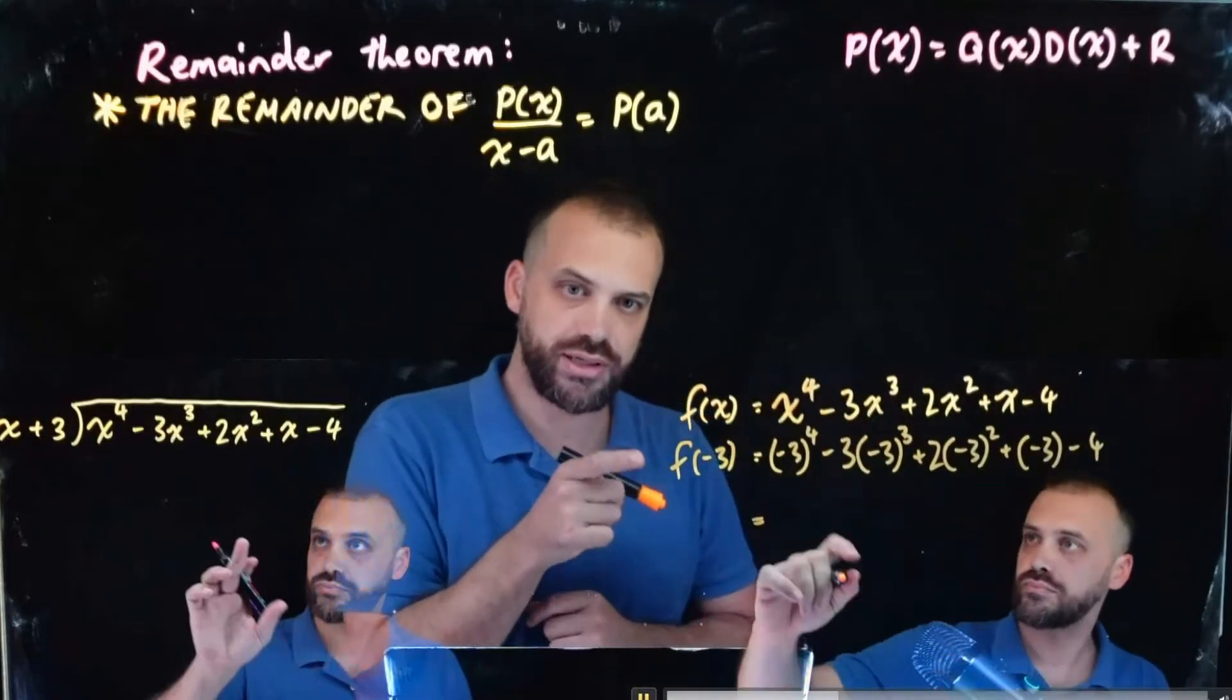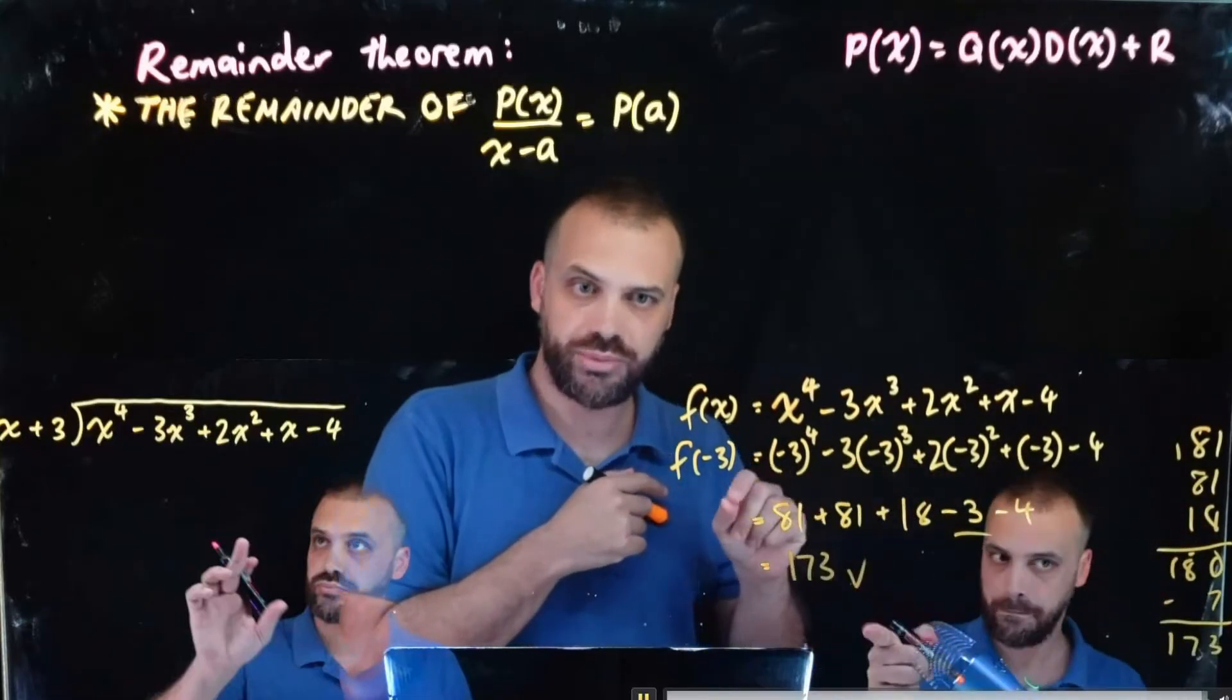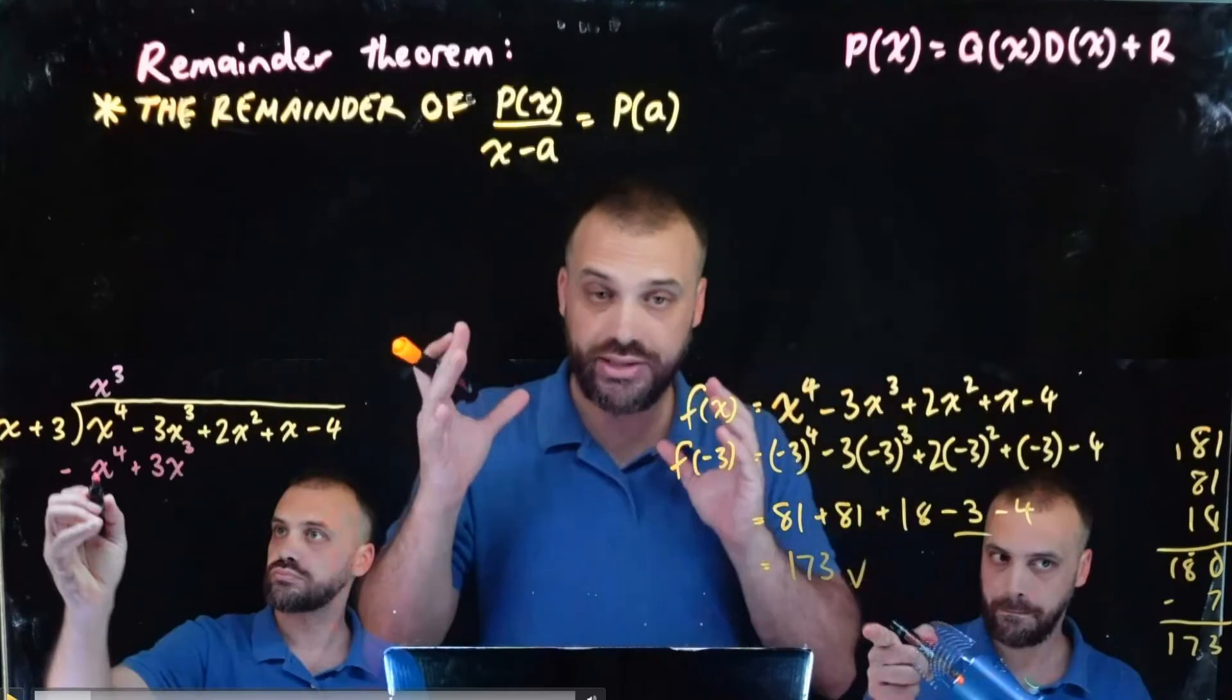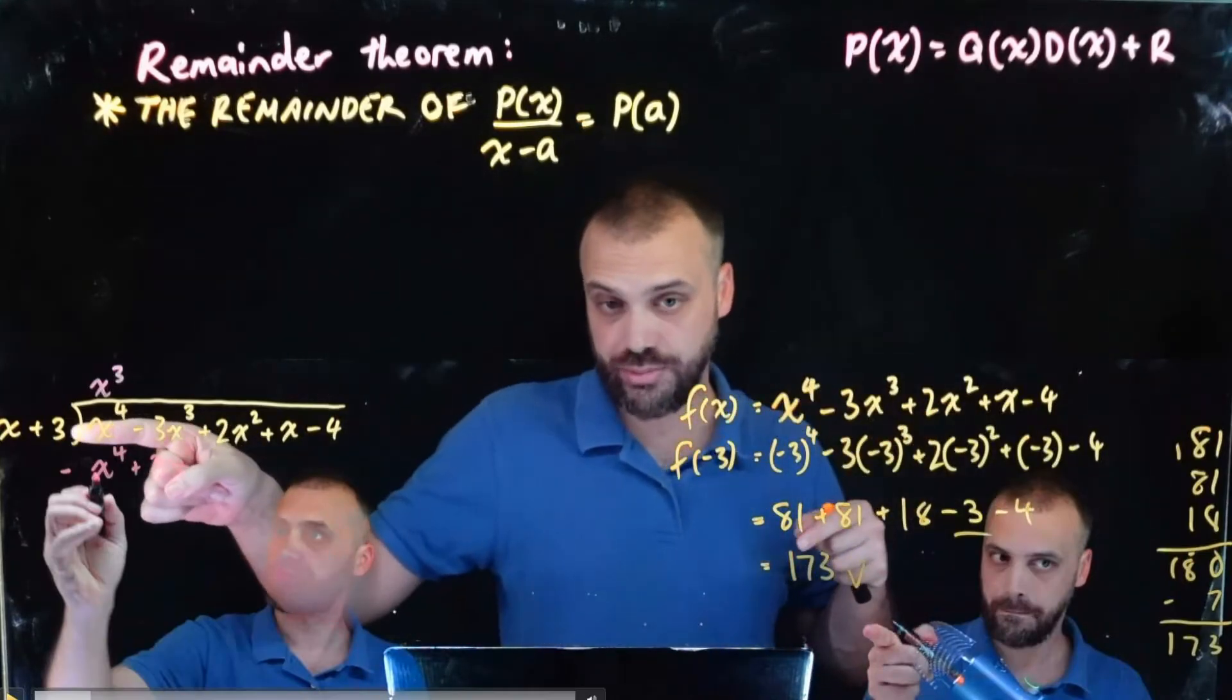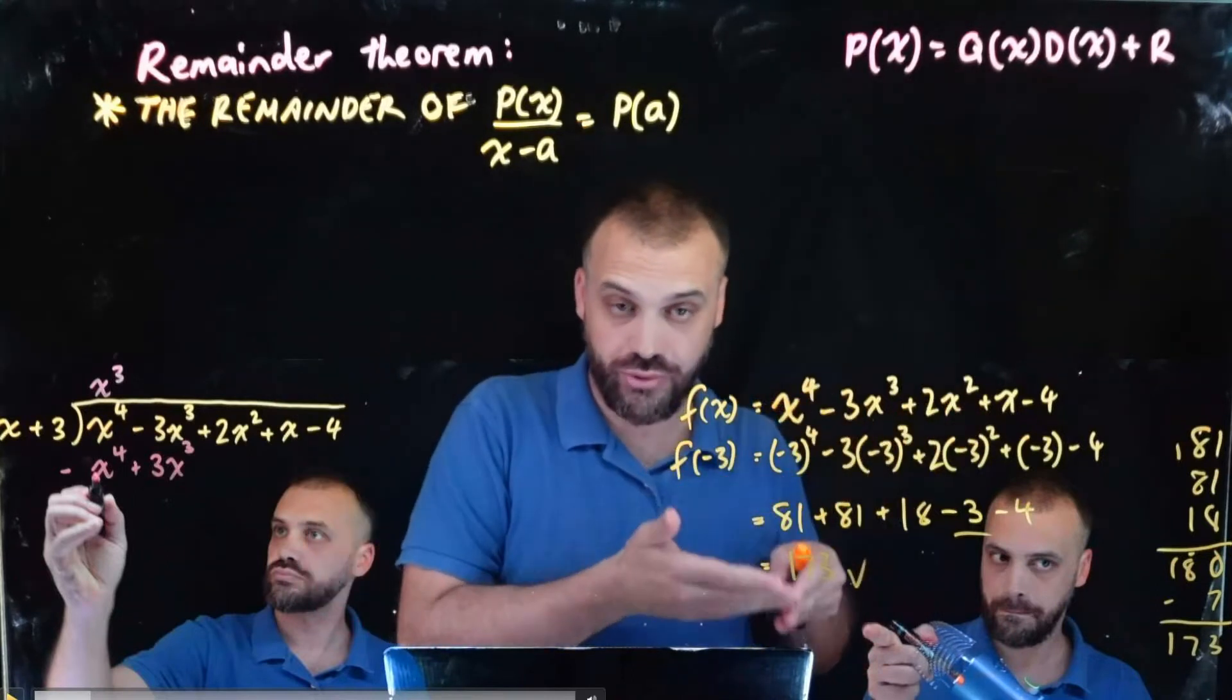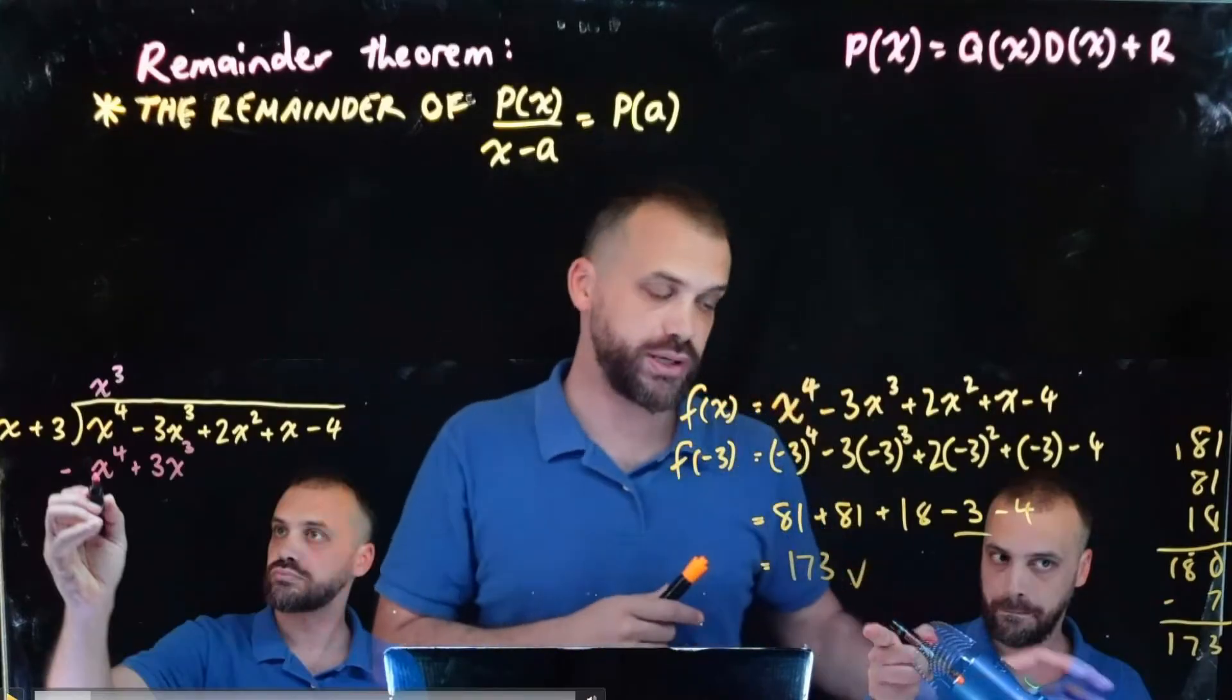You can see subbing in negative 3 here for all the x values, a little bit of mental math, and we get 173. And that's the remainder, that's it. If you want to divide that by, in this case x plus 3, just sub in minus 3 into your function and you know the remainder. No polynomial division, find the remainder. Super, super easy.